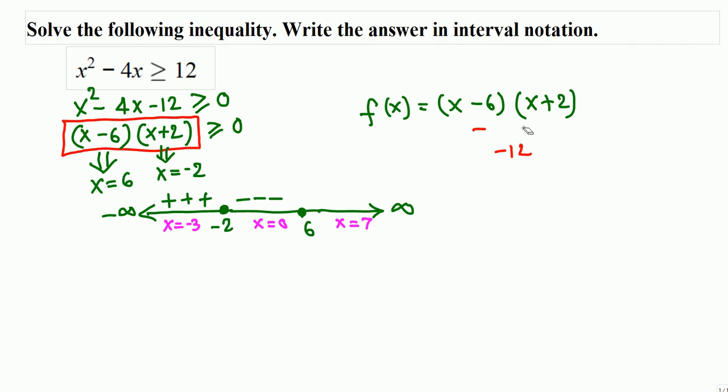Now repeat the same thing for the last interval. Let's take x equals 7. 7 minus 6 is 1, 7 plus 2 is 9, 1 times 9 is 9. Just positive here. Okay so this is positive.